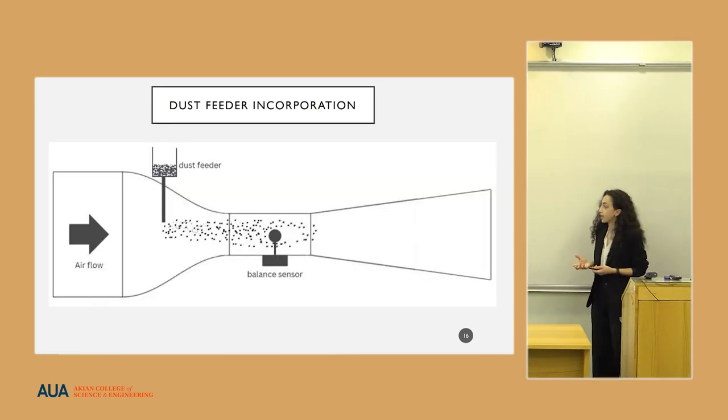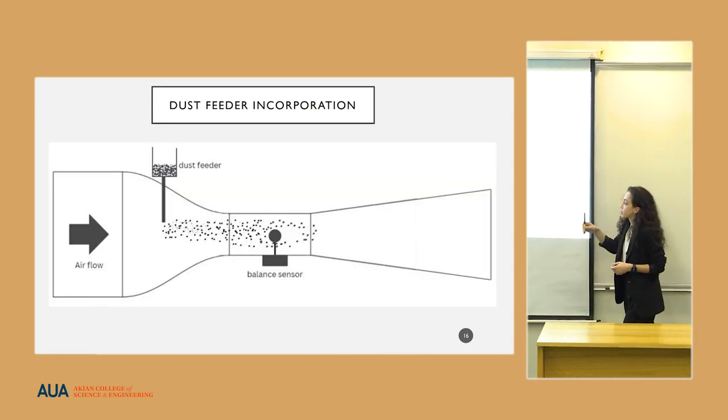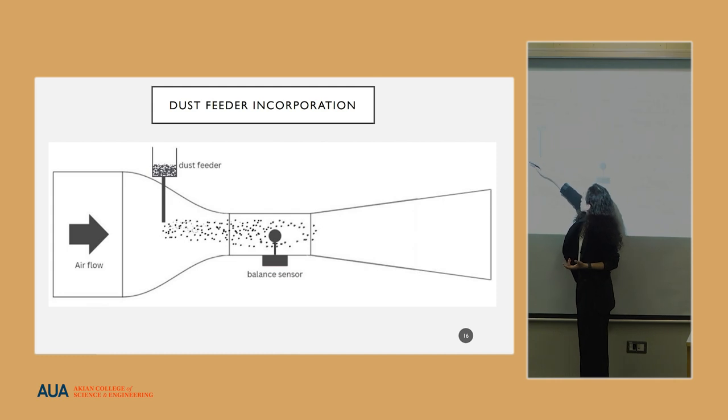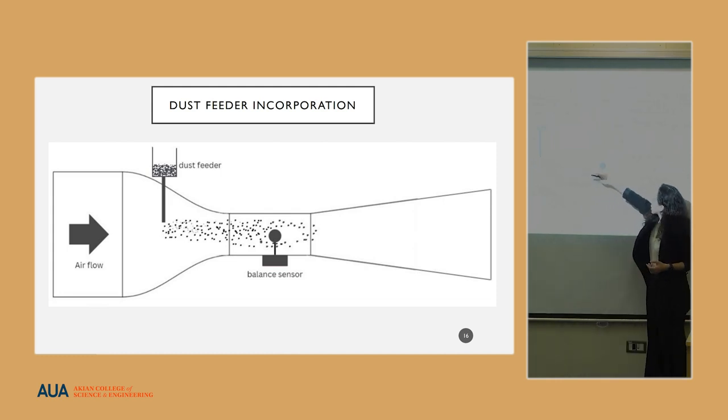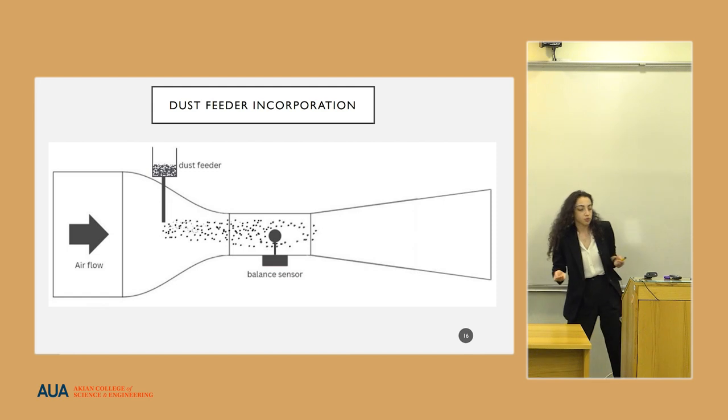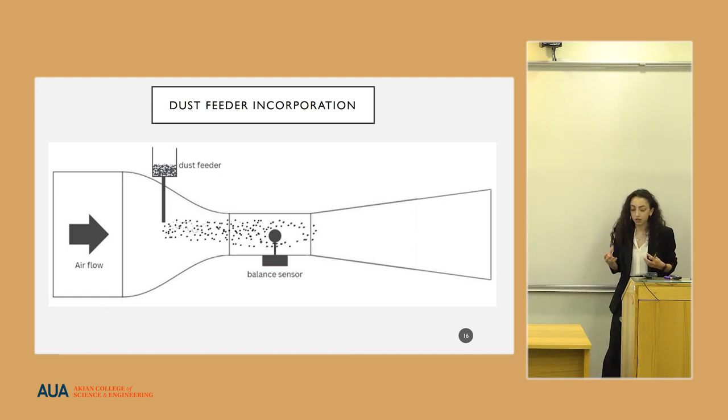Not forgetting about the dust feeder placement. Here, somewhere in the contraction section, will be placed a dust feeder, and the particles will be injected and become part of the airflow. Here they will hit the testing object, and with the help of the balance system, the change of aerodynamic properties will be recorded.